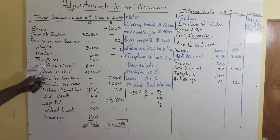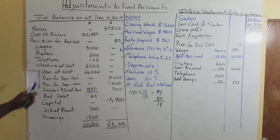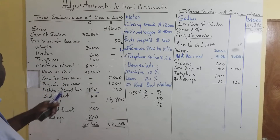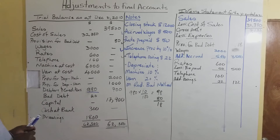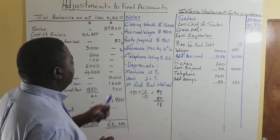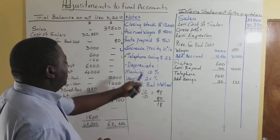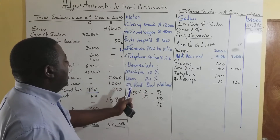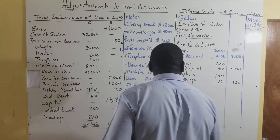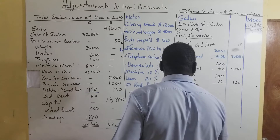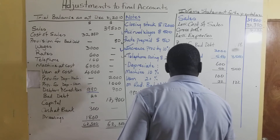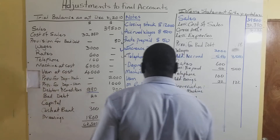Machine at cost and van at cost do not go to the income statement directly, but we need to apply the depreciation adjustment. We must find 10% of machine and 20% of van using the reducing balance method. So we now have depreciation for machine and for van to work out.